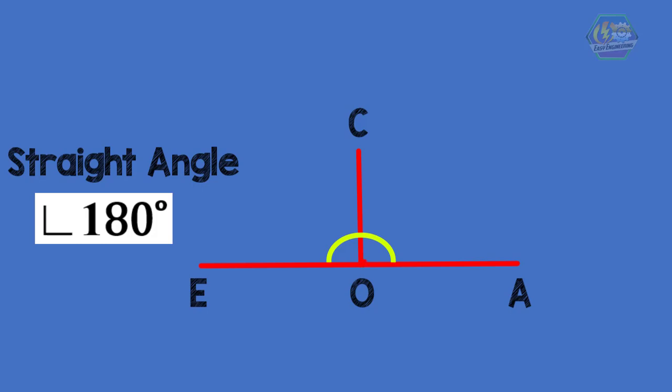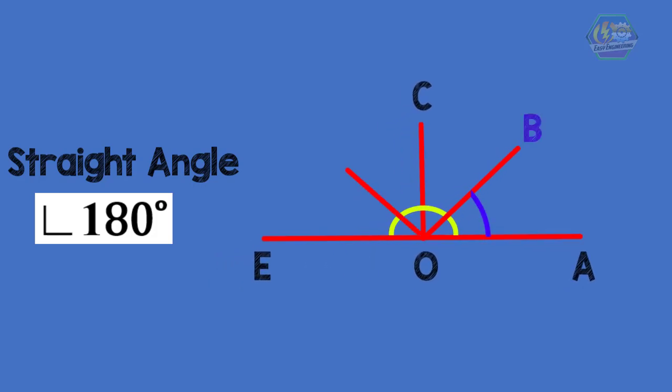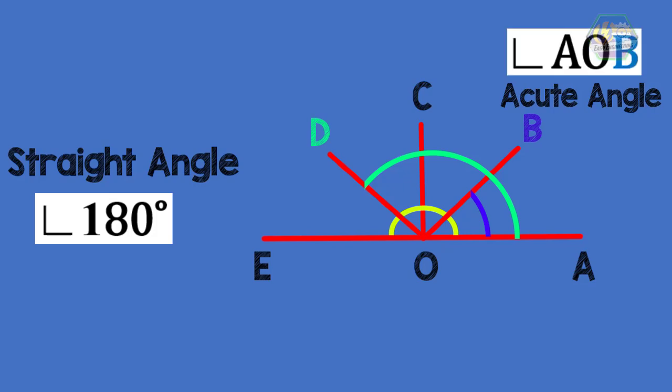Now what if we have an angle less than 90 degrees, or angles that are greater than 90 degrees but less than 180 degrees? What do we call them? Okay, so the angles which measure less than 90 degrees are called the acute angles. In this example, angle AOB is an acute angle. Please take a look at the picture.